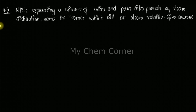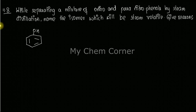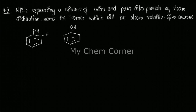Before we solve this, let's look at the structures. We need both ortho and para-nitrophenol. The first structure drawn is orthonitrophenol and the second is paranitrophenol — so we have both structures ready.